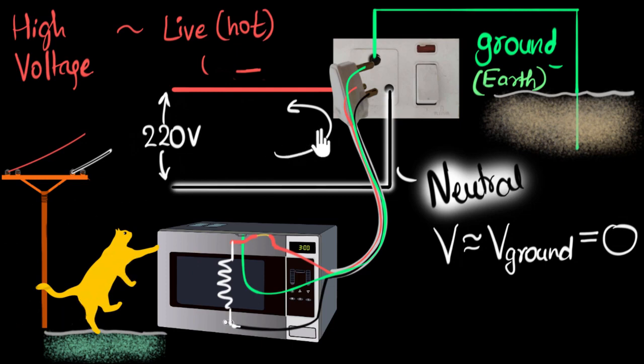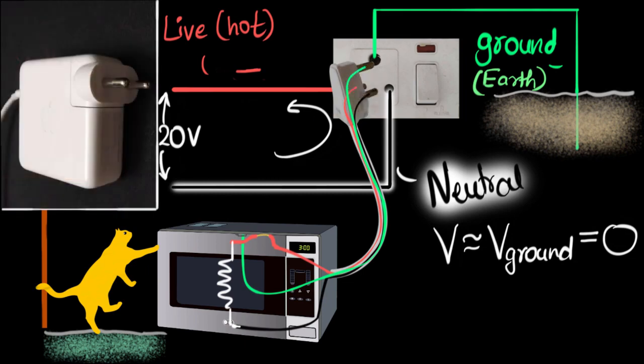At this point, you might say, wait, not all the plug points have a three pin, right? For example, mobile chargers and my MacBook charger, I have only two pins. What's going on there? Well, that just means that the amount of current we are dealing with over there is so minuscule that even if we get a shock, it's not a big deal. So it's not worth investing in putting another pin.